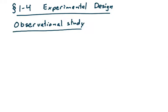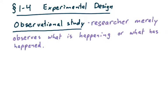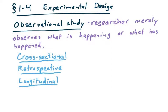In this next section, 1-4 on experimental design, we're going to first distinguish between types of statistical studies. The first type is what we call an observational study. In an observational study, the researcher merely observes what is happening or what has happened in the past. Observational studies can be further categorized: cross-sectional studies, retrospective studies, and longitudinal studies.